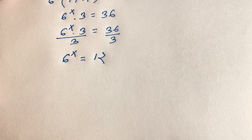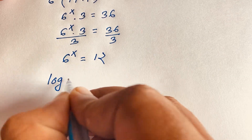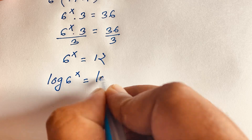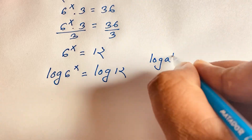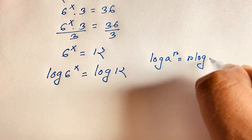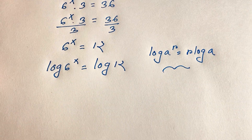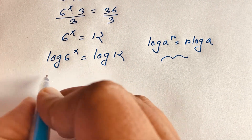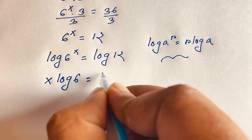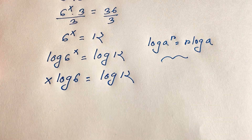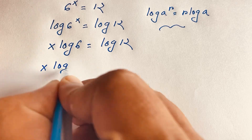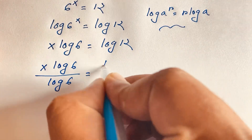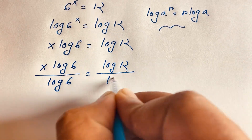Now, if I want to find out the value of x, I apply log to both sides. So log of 6 to the power x is equal to log 12. Then we know that log of a to the power r is equal to r times log a. According to this log rule, the exponent x moves to the front, so it will be x log 6 is equal to log 12. Now I divide both sides by log 6.